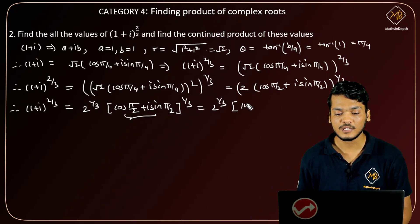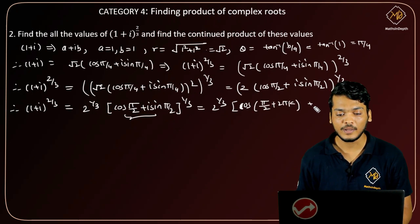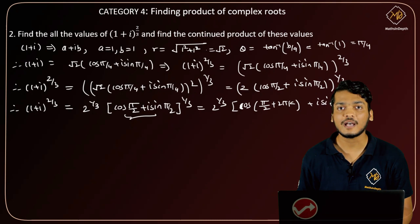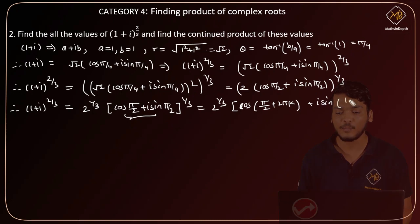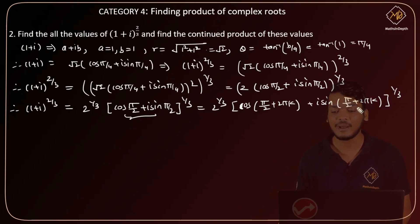This can be written as cos((π/2 + 2πk)/3) + i·sin((π/2 + 2πk)/3). Using de Moivre's theorem, 1/3 is multiplied with (π/2 + 2πk).